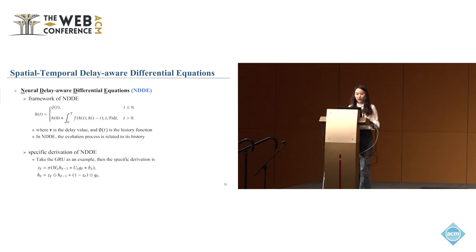Then we introduce our neural delay-aware differential equations. This equation gives a framework of our proposed NDDE, where tau is the delay value and phi_t is the historical function. In NDDE, the evolution process is related to its history. As this is a framework, the function f is not specifically defined. Then we give a specific derivation of the NDDE.